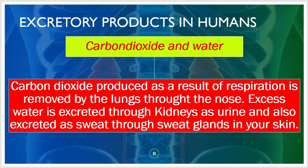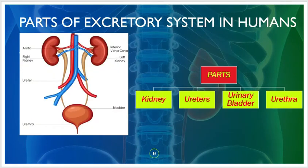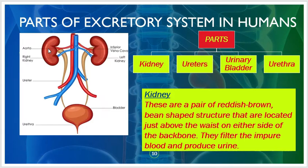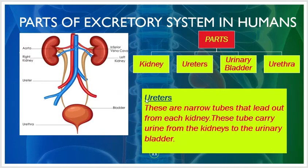The parts of the excretory system in humans are: kidneys, ureters, urinary bladder, and urethra. There are two kidneys — right and left. The kidneys are a pair of reddish-brown, bean-shaped structures located just above the waist on either side of the backbone. They filter impure blood and produce urine.